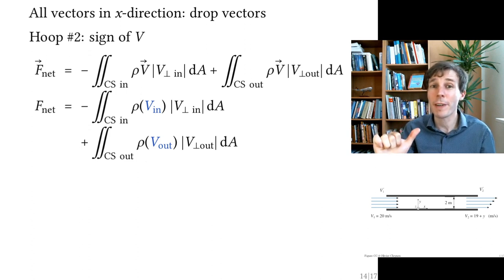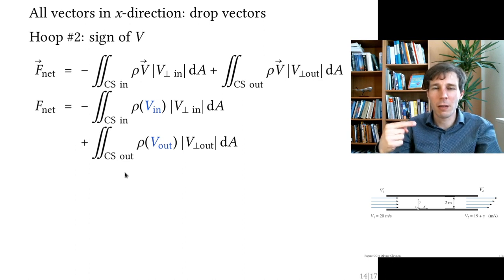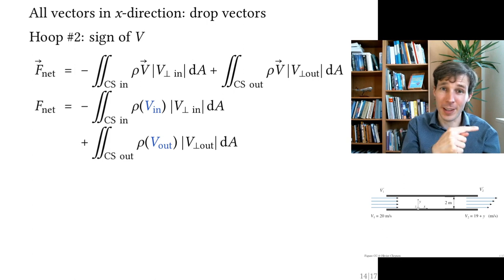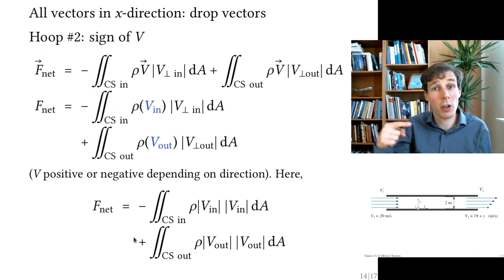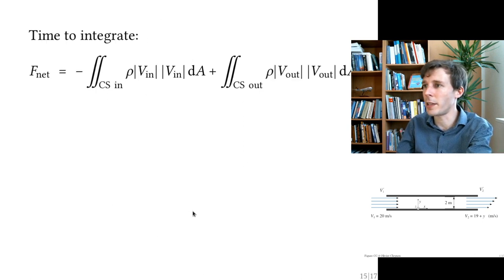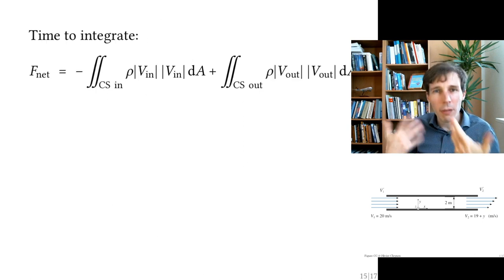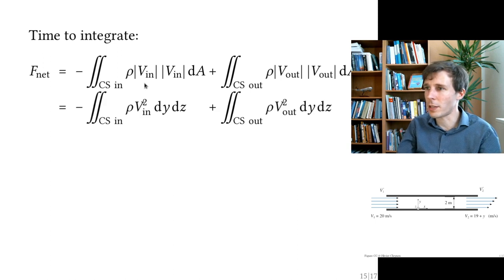Removing the vectors gives us a scalar equation for F_net. Since all vectors are in the x direction, I can remove the arrows without changing the magnitude. In this diagram, x is positive to the right and all velocities are also positive in that direction, so all v_in and v_out values are positive numbers. I can replace them with their absolute values without changing signs, though this depends on the orientation in each problem.